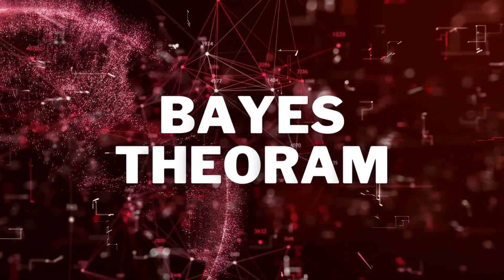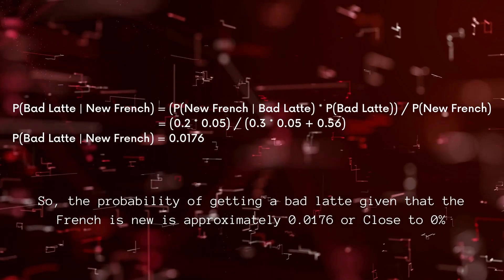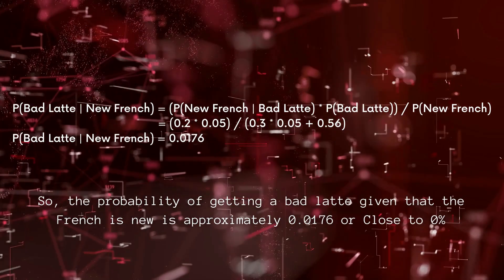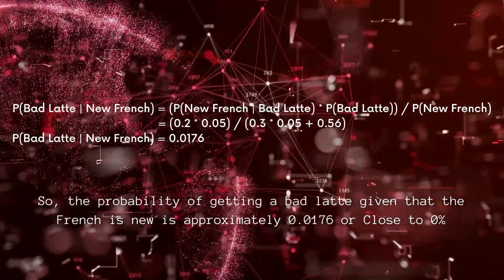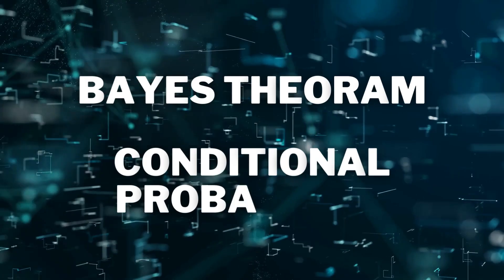And here is the result. As you can see the probability of getting a bad latte from a new barista is low. And that's it. We have covered the basics of Bayes theorem and conditional probability here.